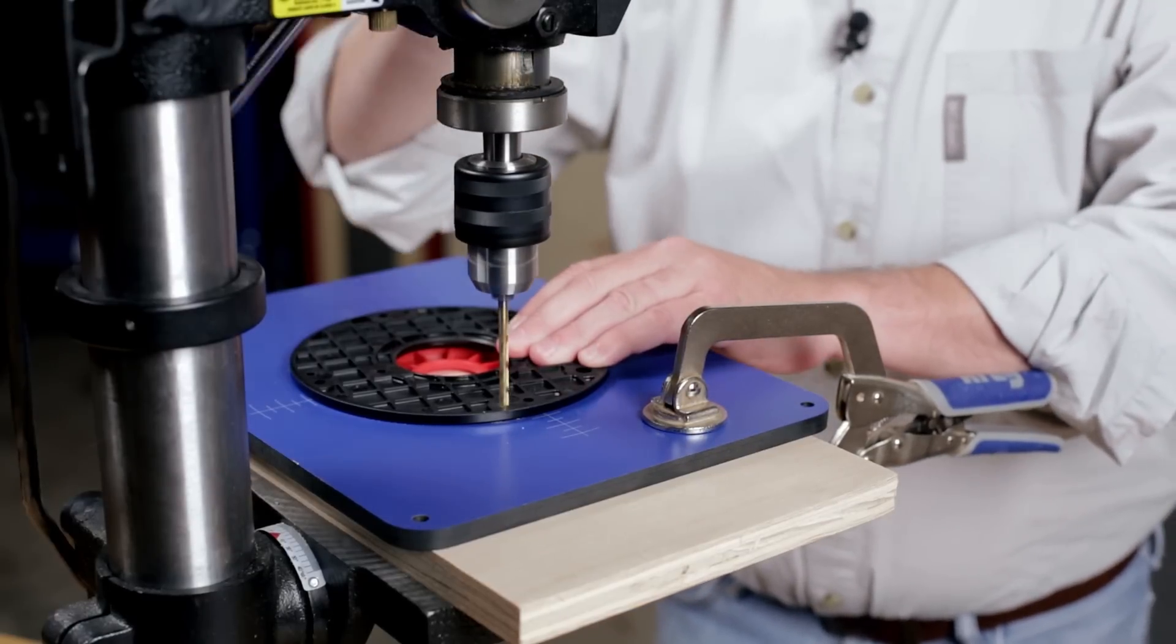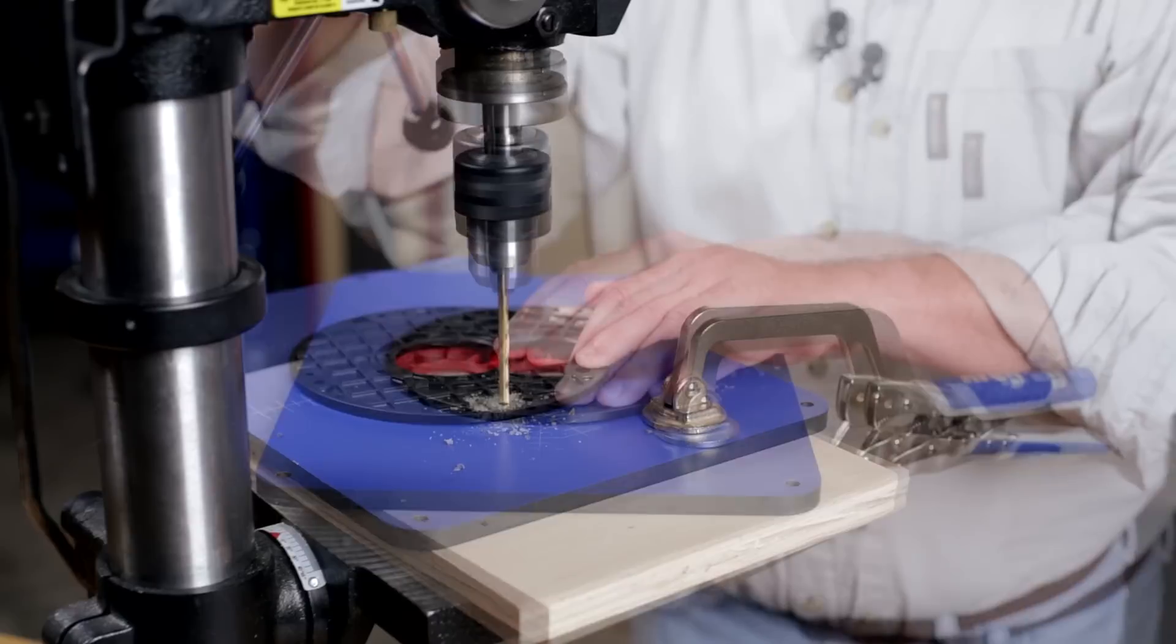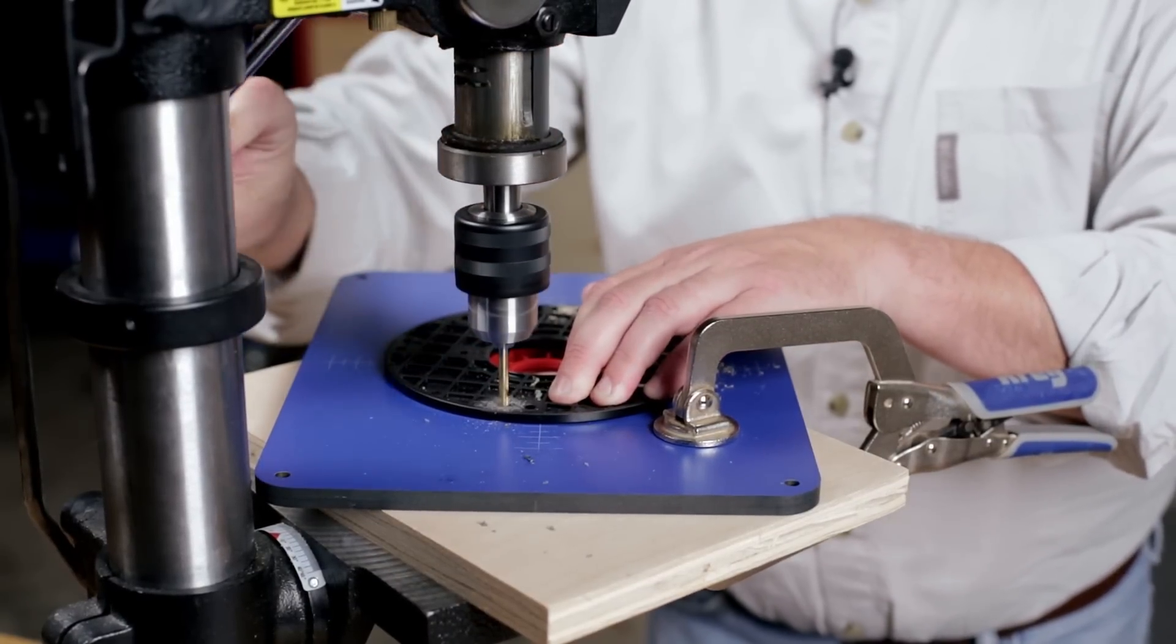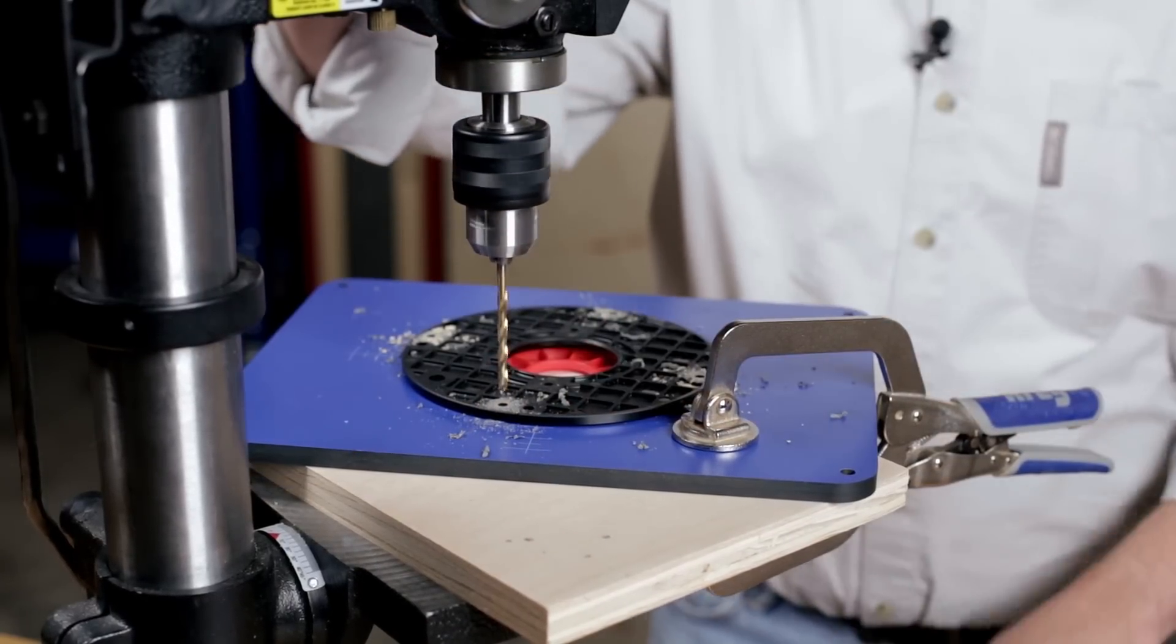If you have a drill press, use it because that's the best way to ensure straight perpendicular holes, and be sure to select a drill bit that's sized to match the holes in the subbase. Place a piece of scrap wood under the plate to reduce chipping as the drill bit passes through.